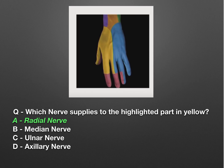Next, a hand picture was given with a highlighted part in yellow. The question asked which nerve innervates the highlighted part. The options were radial nerve, median nerve, ulnar nerve, and axillary nerve. The answer was radial nerve — this is relatively straightforward if your anatomy concepts are clear.